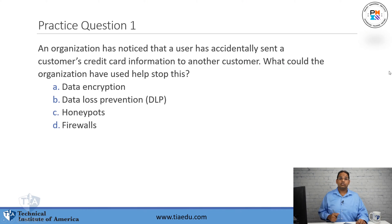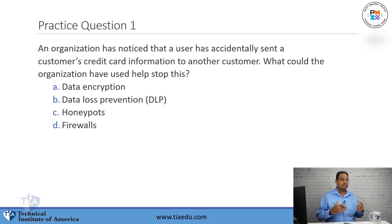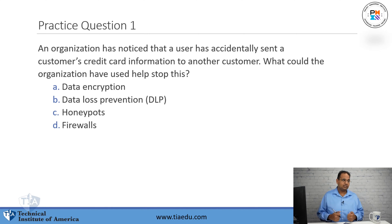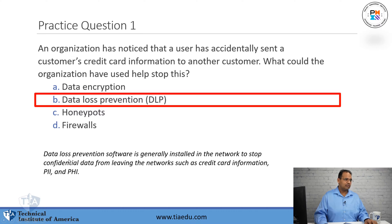Question number one: an organization has noticed that a user has accidentally sent customer information to another customer. What could the organization have used to stop this? A, data encryption. B, data loss prevention. C, honeypots. D, firewalls. The answer is B, data loss prevention.